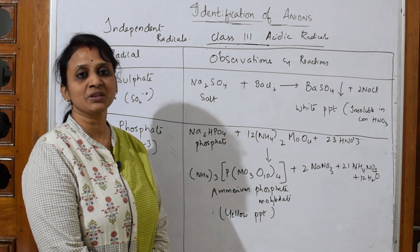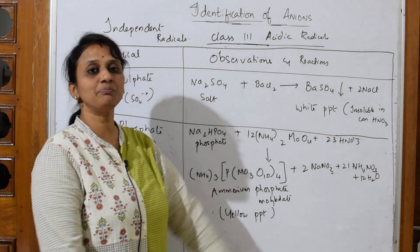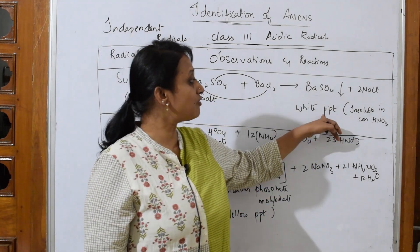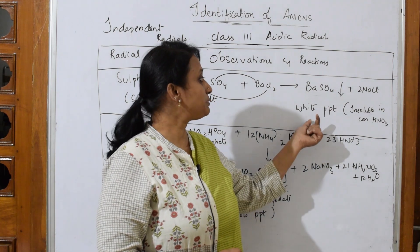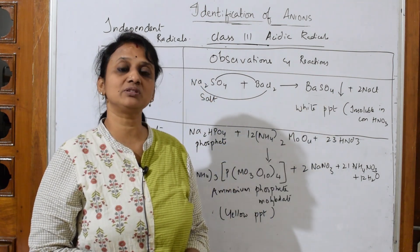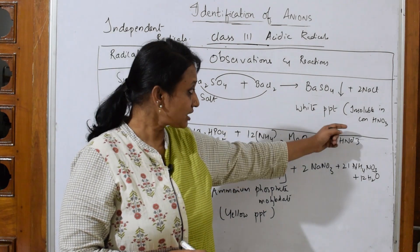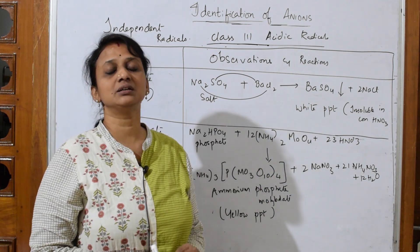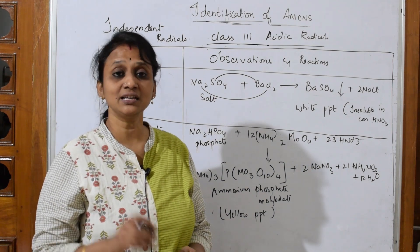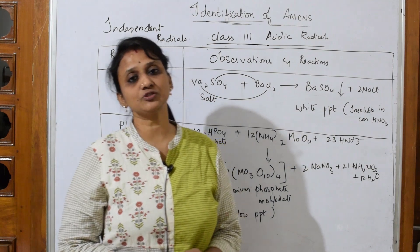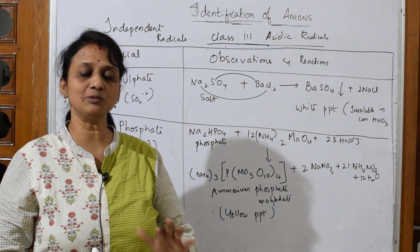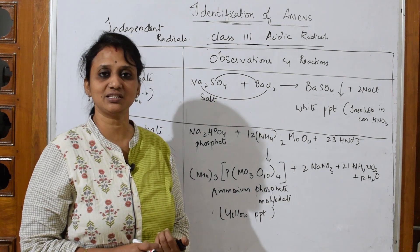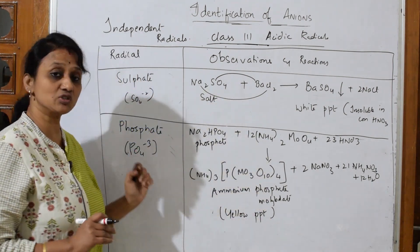Once you add barium chloride, immediately you get a white PPT. It's a double displacement reaction — barium sulfate and sodium chloride are produced. The formation of white PPT confirms the presence of sulfate. To further confirm, take the same white PPT and add it into concentrated nitric acid — it remains insoluble. That confirms the presence of the sulfate anion. Salt + barium chloride gives barium sulfate white PPT, which is insoluble in concentrated nitric acid.